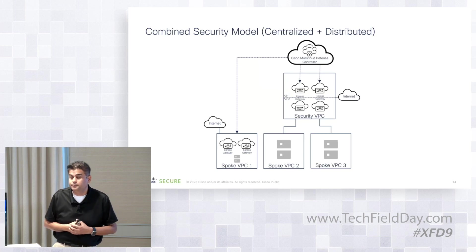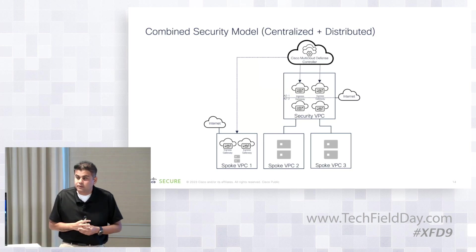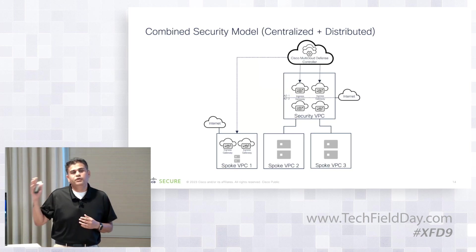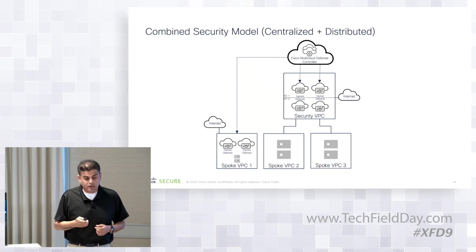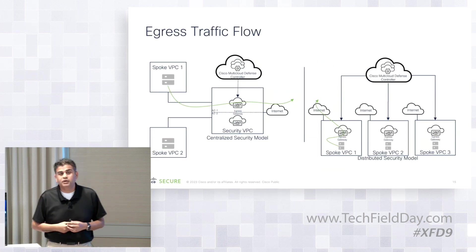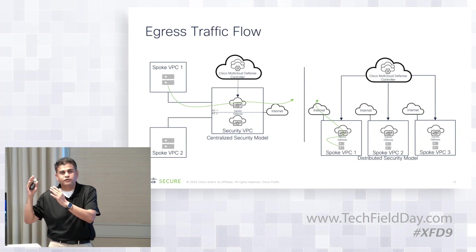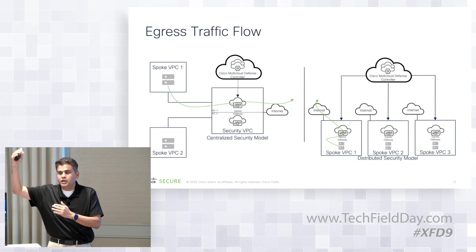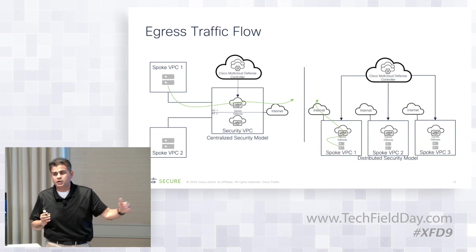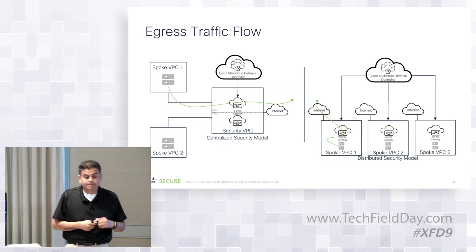For AWS Transit Gateway, we recommend the centralized security model. The centralized security model includes the Transit Gateway, Gateway Load Balancer, Gateway Load Balancer Endpoint, and our gateways in the security VPC. The Transit Gateway connects to different application VPCs.